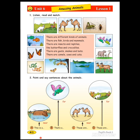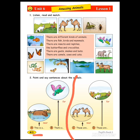Okay, let's move to this part. This. That. This. That. If I'm talking about one thing near me, I use 'this.' If it's far away, I use 'that.' This is a hippo. That is a bird.